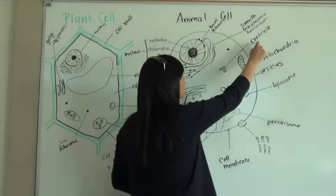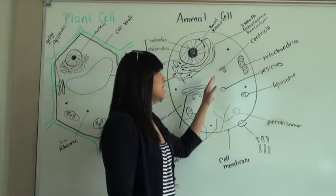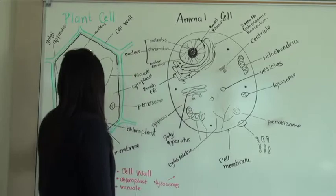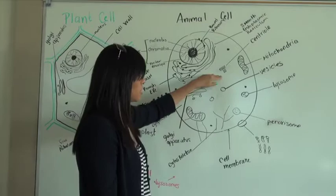Another one we have is our centrioles, which are also only in the animal cell. The centrioles provide the spindle fibers needed in cell division, so that's why they're really important. Plant cells don't have these; they develop a cell plate and divide differently than animal cells.